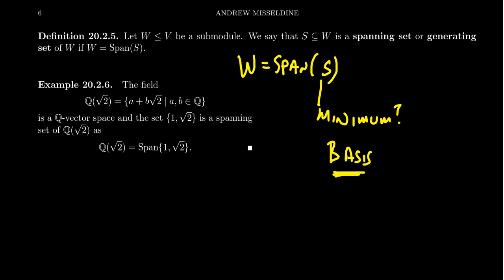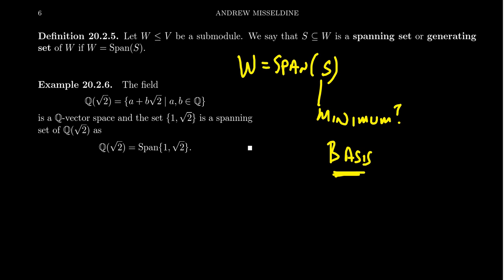Let's end with an example. Consider the vector space Q[√2]. Every element is a rational number plus a rational number times √2. So the set {1, √2} forms a spanning set — Q[√2] equals the span of 1 and √2. Spanning sets are not unique, but this is the standard basis for this field extension. This concept will recur throughout our study of rings. That ends lecture 22, reviewing vector spaces and subspaces in the broader context of modules and submodules.